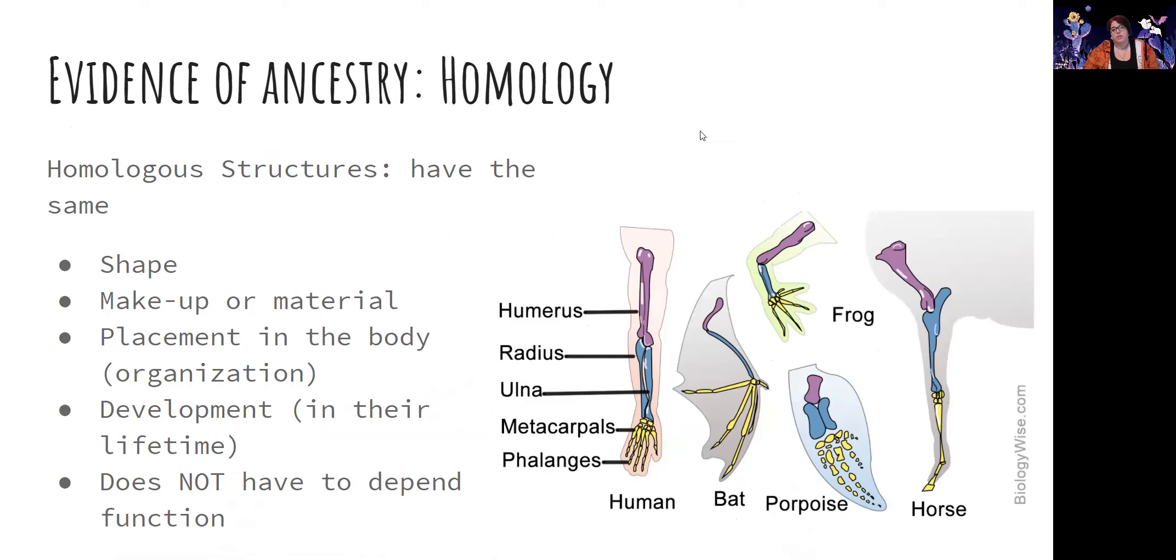One of the major pieces of evidence that we use to suggest shared ancestry or more recent shared ancestry are homologous structures. So homologous structures have the same shape, makeup or material, so what they're actually made of. What we call organization, which means where are they at in relation to other structures in the body. Development, which is like embryo development for humans, for example, so development within their lifetime. And it's important to note that often homologous structures do have the same function, but they do not have to.